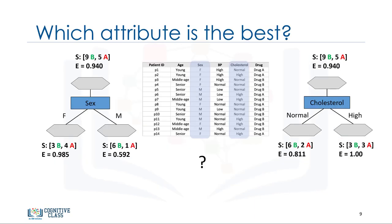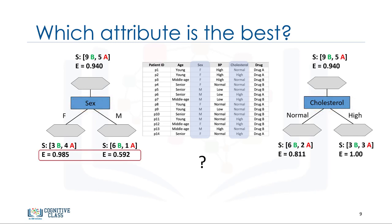Now, the question is, between the cholesterol and sex attributes, which one is a better choice? Which attribute results in more pure nodes for our drugs, or in which tree do we have less entropy after splitting than before? The sex attribute has entropy of 0.98 and 0.59 in its branches, while the cholesterol attribute has entropy of 0.81 and 1.0 in its branches. The answer is the tree with the higher information gain after splitting.